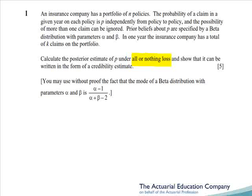However, the question then takes a terrible turn, where it asks us to write it in the form of a credibility estimate, whereas in past questions we've only done this for the Bayesian estimate under quadratic loss, i.e. the mean of the posterior.